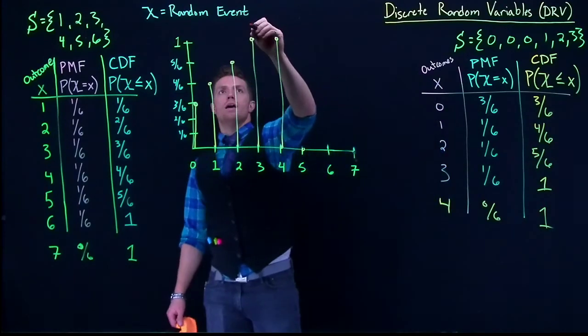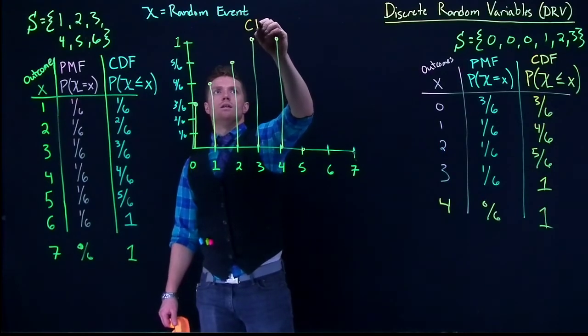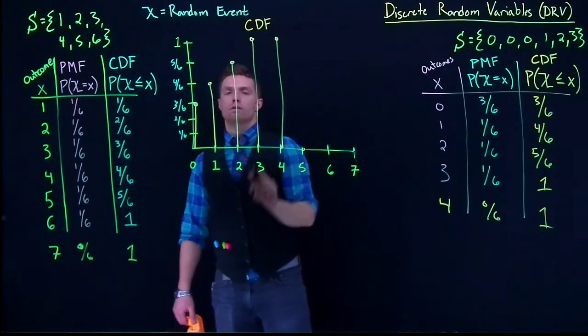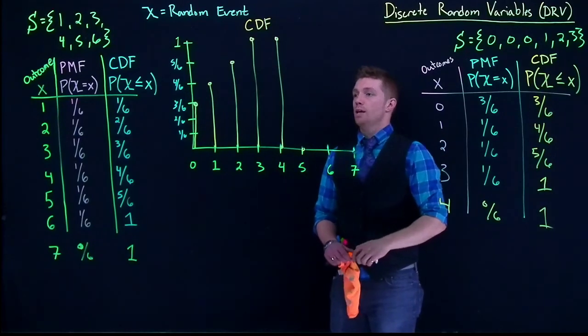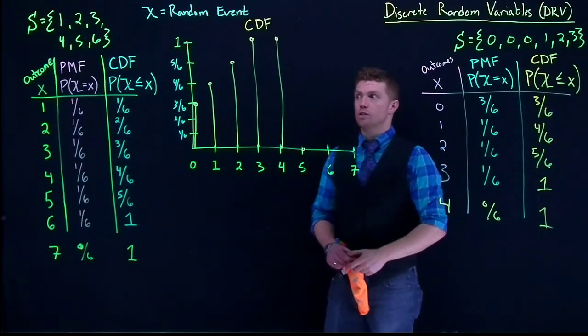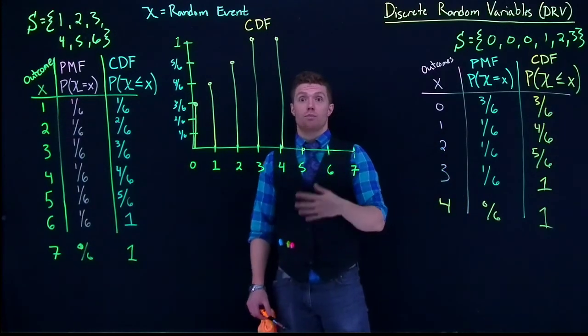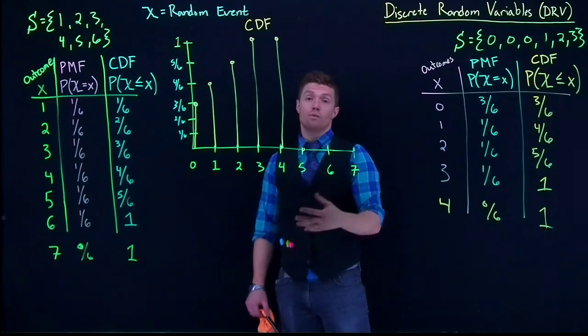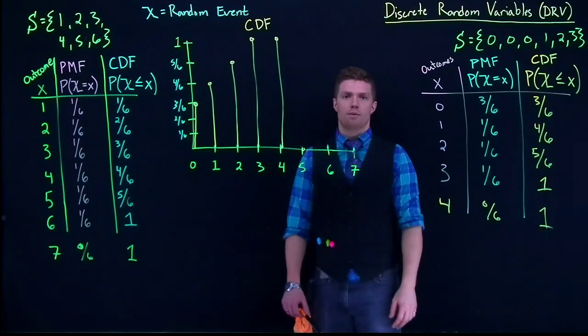So once again, this would be a CDF, our cumulative distribution function. So that's a way that we can visually represent what's happening here with the probability so we can see what's the probability of these events, in fact, happening.